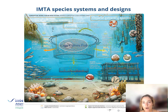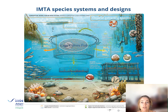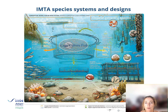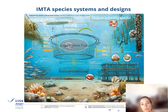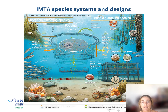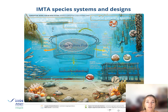Here is the commonly employed conceptual model to describe an IMTA system, where at the center you find the fed species providing organic and inorganic nutrients to the surrounding environment. The organic nutrients will be taken up by organic extractive species — normally filter feeders — while the inorganic nutrients will be taken up by microalgae. At the bottom or on the side of the system are organic deposit feeders making use of particulate organic matter liberated by the fed species.